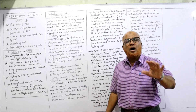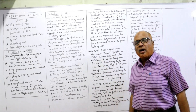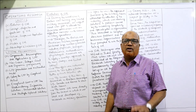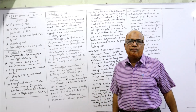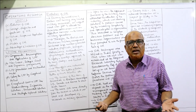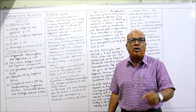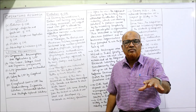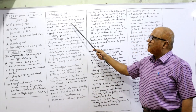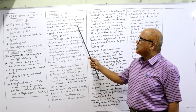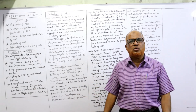First, the evolution of OR — it was originated during World War Two. During World War Two, Britain was having limited resources and they had to win the war. The objective was winning the war but the resources — the arms and equipment — were very limited. Britain was having very limited military resources and an urgent need was felt to allocate the scarce resources to various military operations in an effective manner.